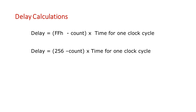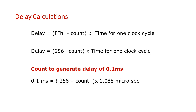We will find the count to generate a delay of 0.1 milliseconds. Substituting: 0.1 ms = (256 − count) × 1.085 µs. Here we assume a crystal frequency of 11.059 MHz divided by 12, giving the timer frequency, and 1 divided by that frequency gives 1.085 µs per clock cycle. Solving this, the count in decimal is 164, which is A4H. This count is stored in the TH0 or TH1 register.